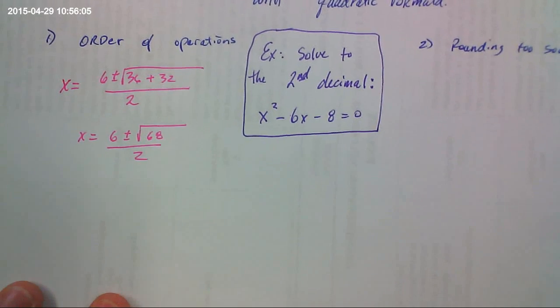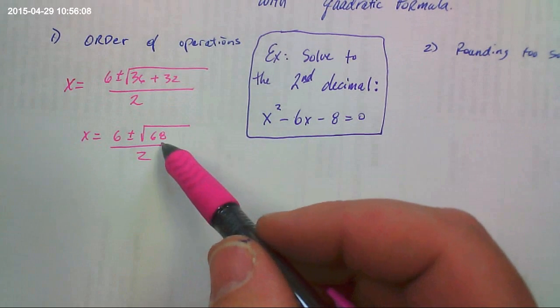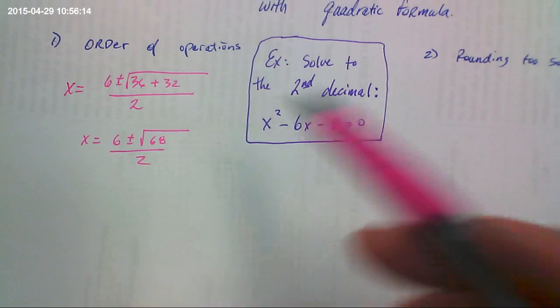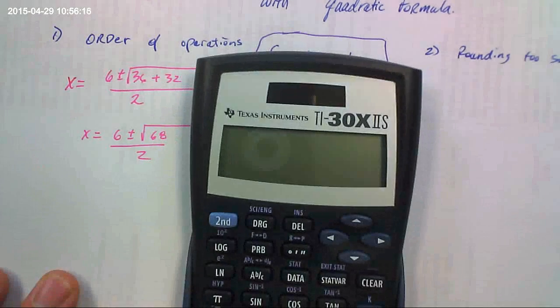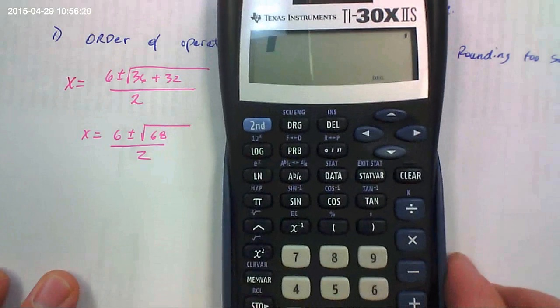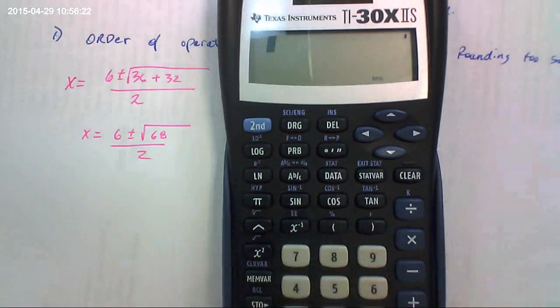Now from here, a lot of times people don't even consider if this is something that can be simplified. Let's see. 4 doesn't go into it, so I would just stop there anyway since I'm going to be using my calculator. Let's see if I can get the whole thing to be shown.